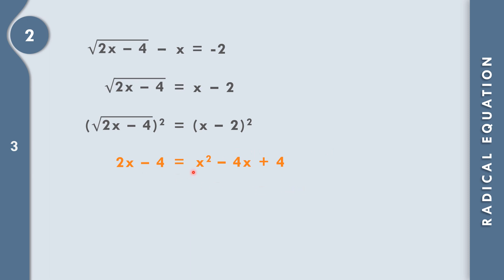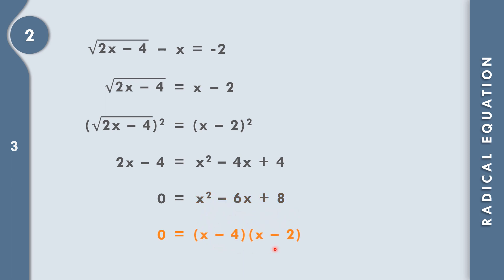Combining like terms: moving 2x to the right gives negative 2x, and negative 4x minus 2x is negative 6x. Moving negative 4 to the right gives positive 4, so 4 plus 4 equals 8. The equation becomes 0 equals x squared minus 6x plus 8. Factoring, we need two numbers that multiply to 8 and add to negative 6: that is negative 4 and negative 2. So the factors are x minus 4 times x minus 2.